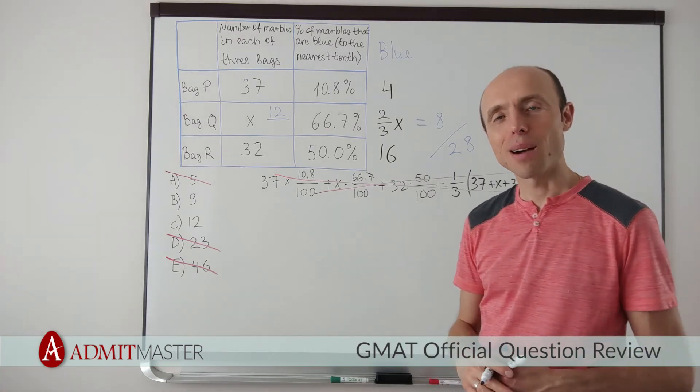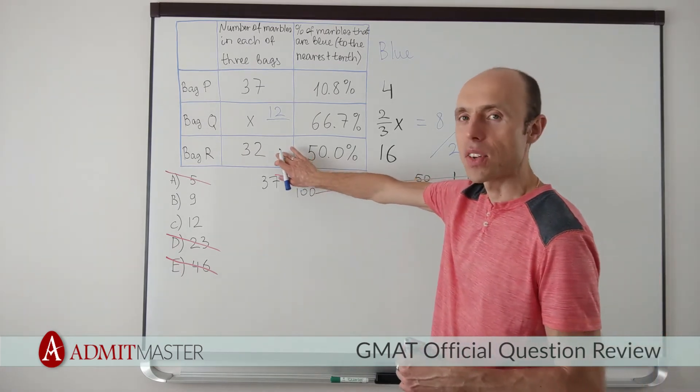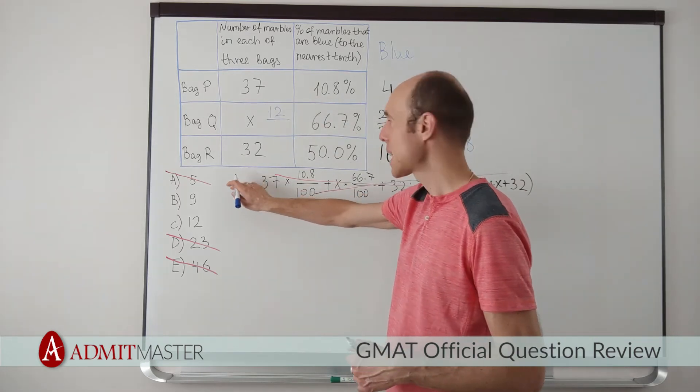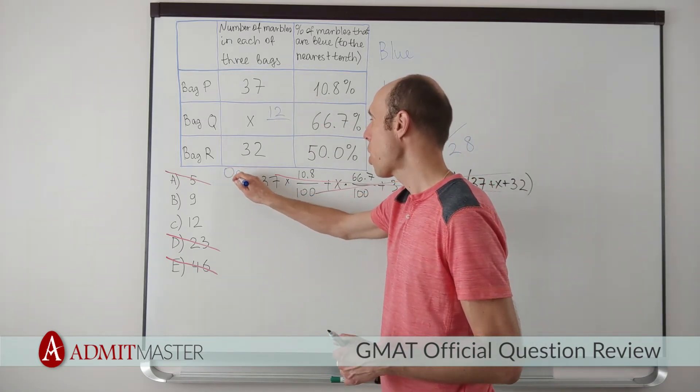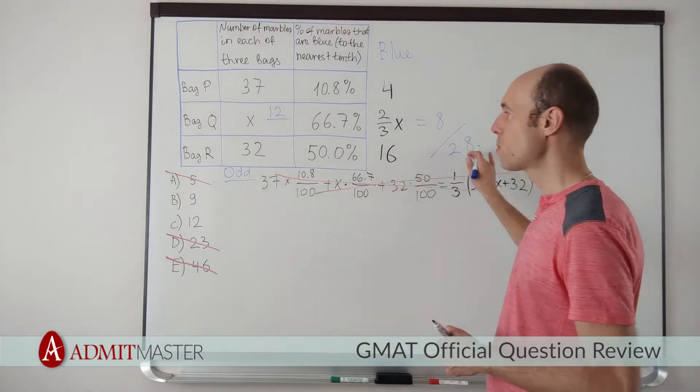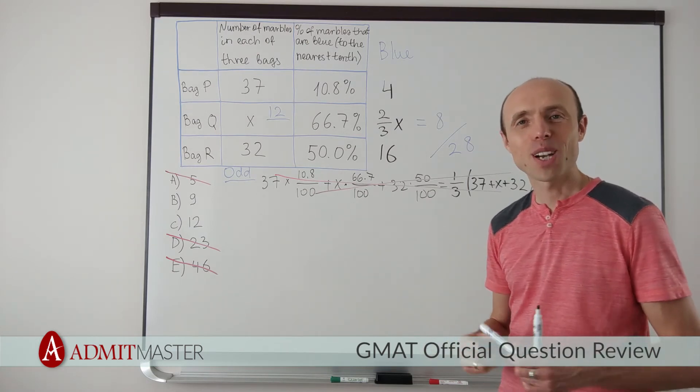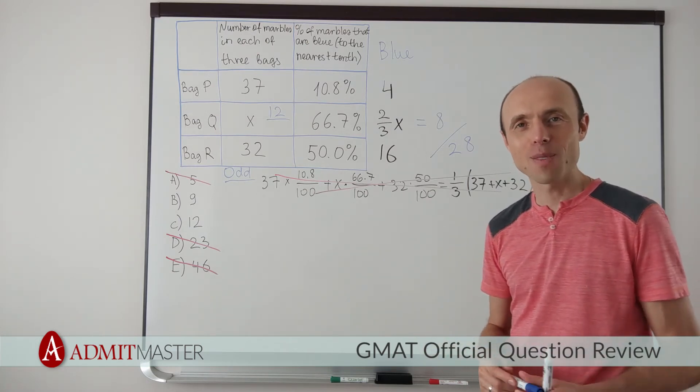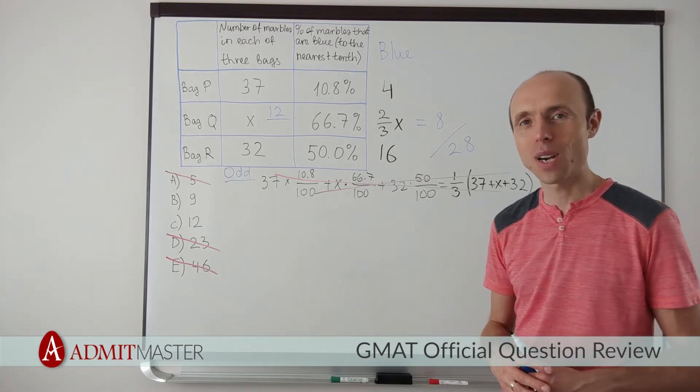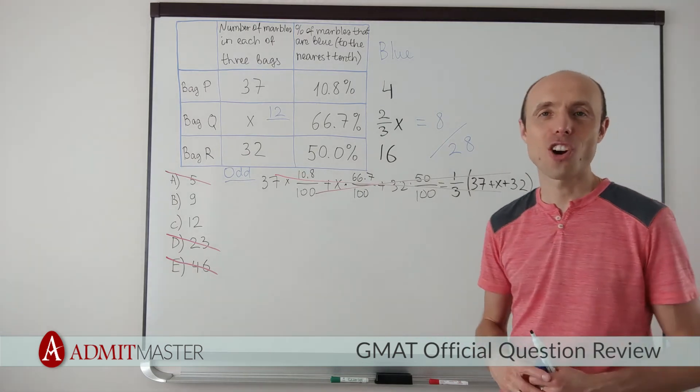Well, I could calculate that number, or I could look at this number and say, well, this number is even, so is this number, but this number is odd. So whatever number I get here is going to be an odd number. And then a third of that number has to equal 28. Well, that's not possible. Because if I take an odd number, and I take a third of an odd number, assuming that number is divisible by 3, then I have to get another odd number.